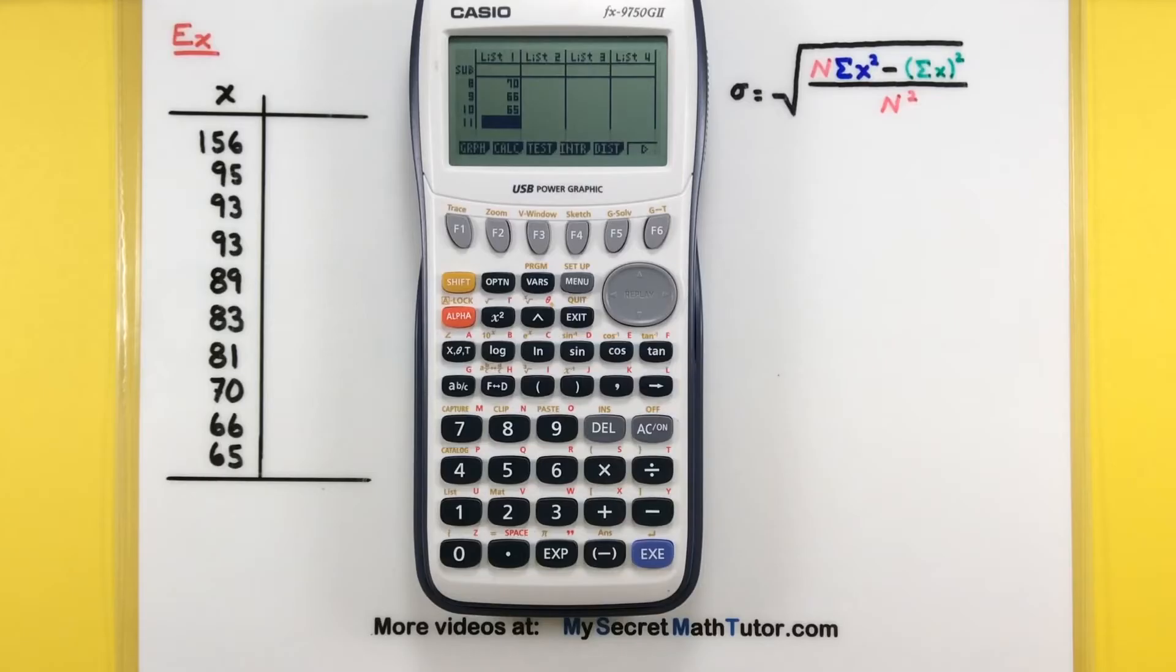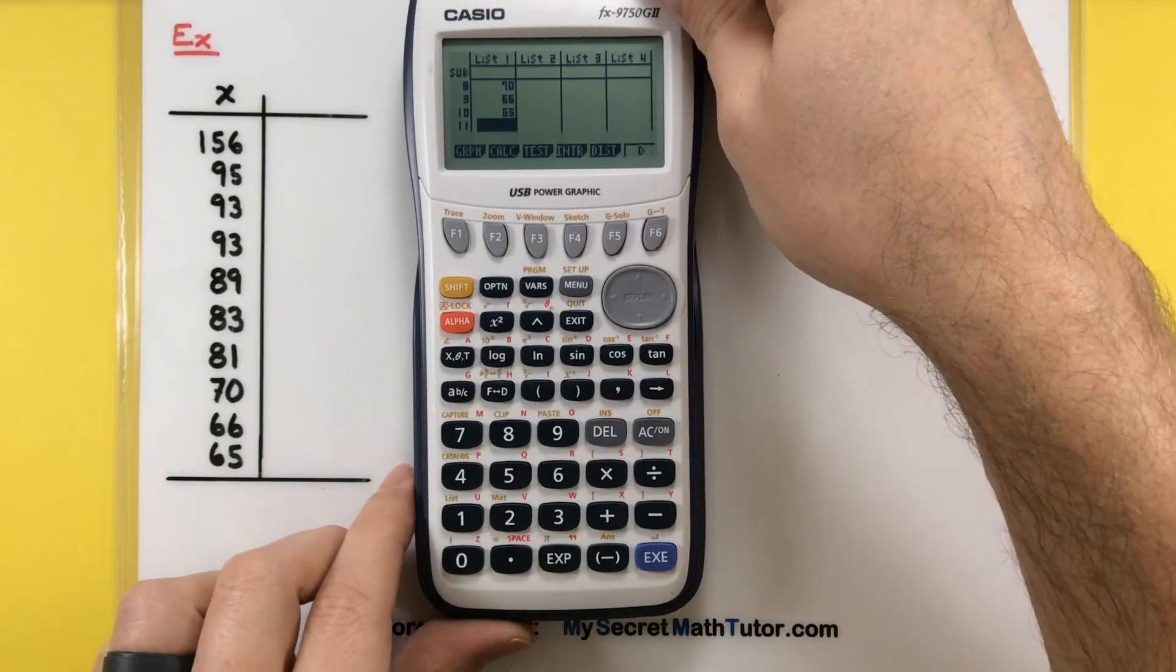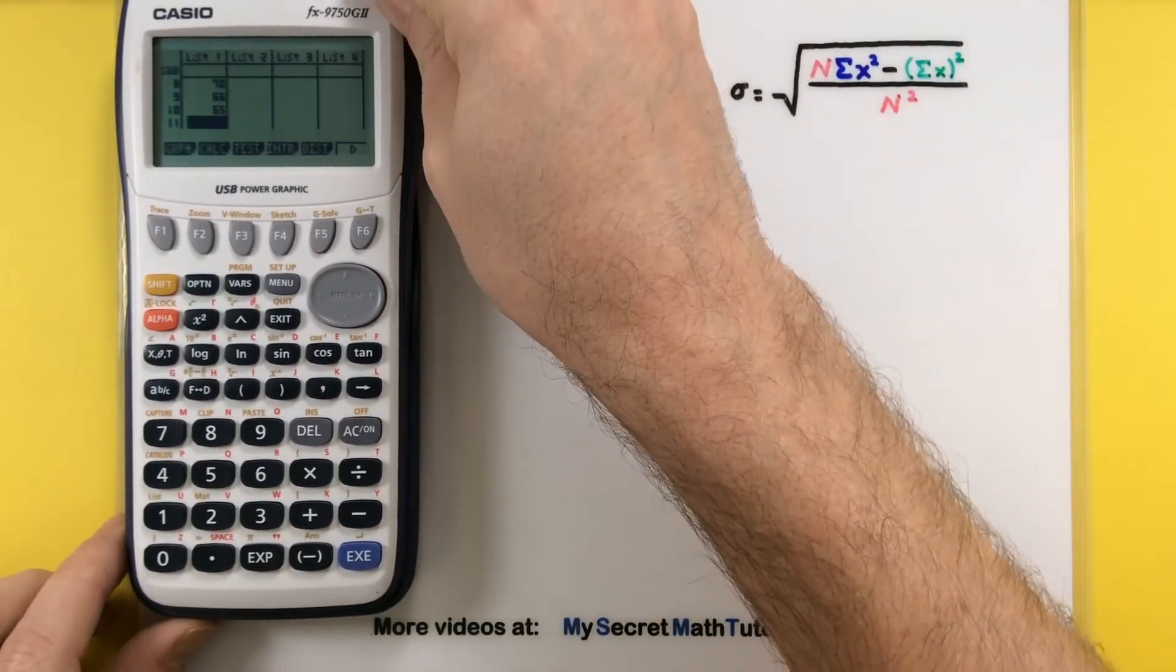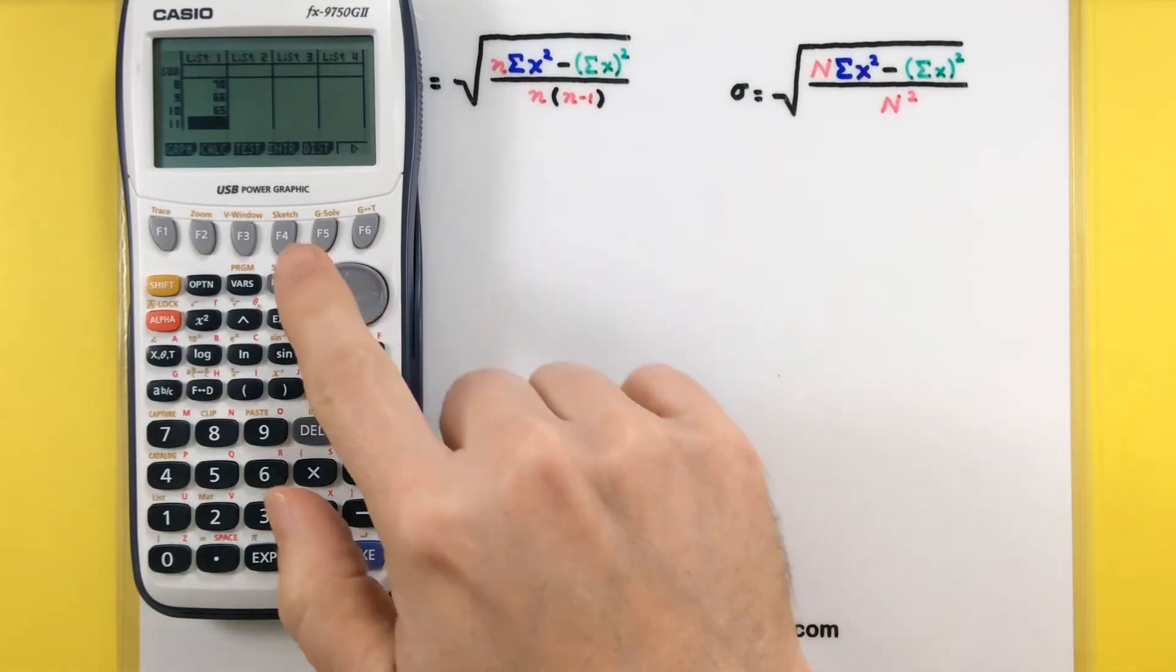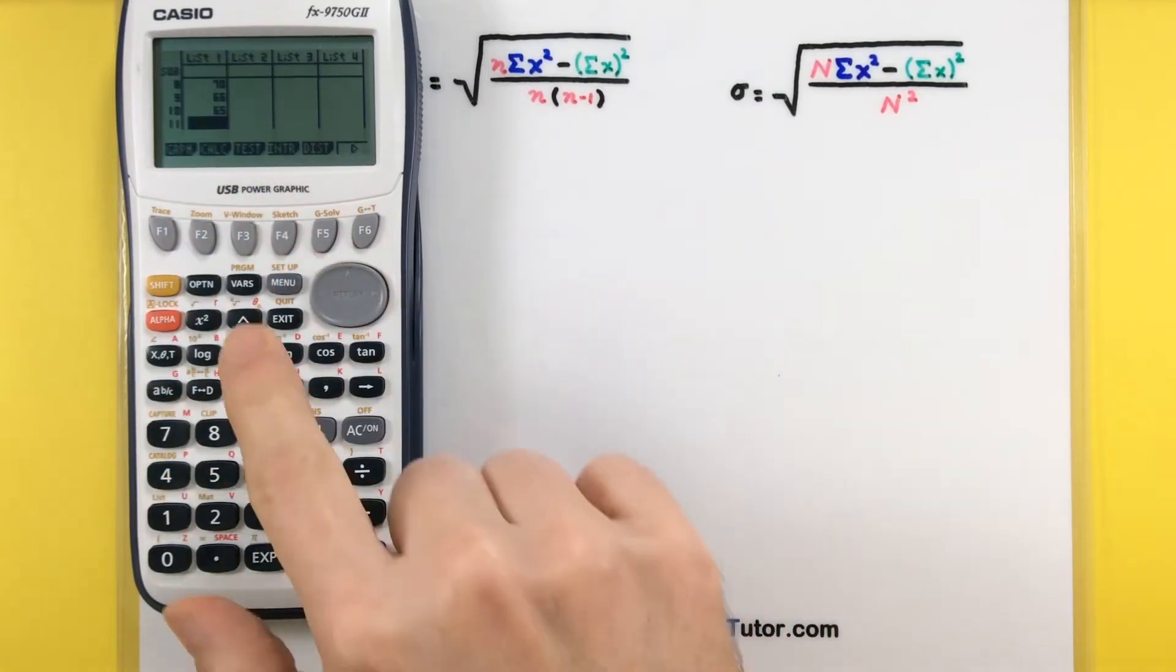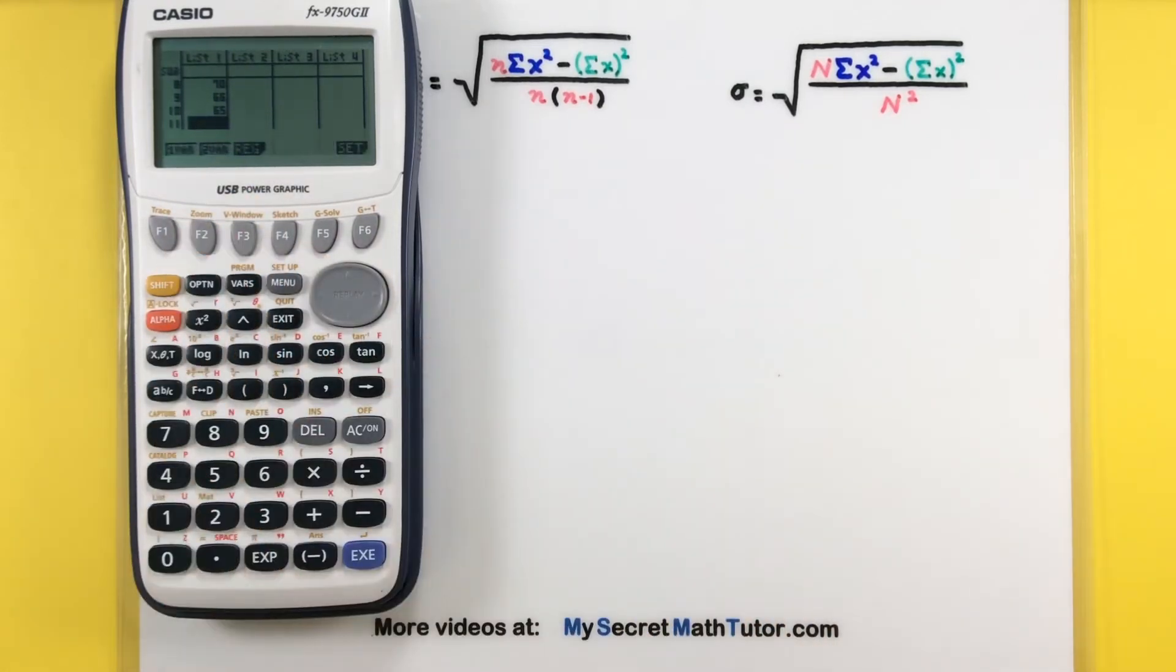Now that all the data is entered, we need to calculate the standard deviation. If you look near the bottom, you'll see different options. The second option says calc, so press F2 to access that.